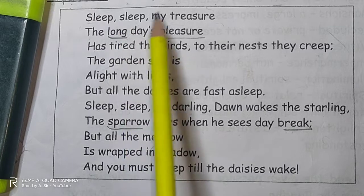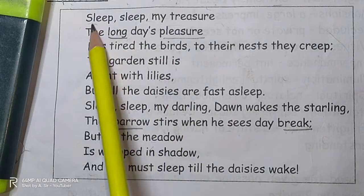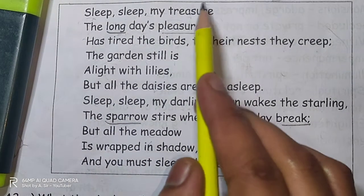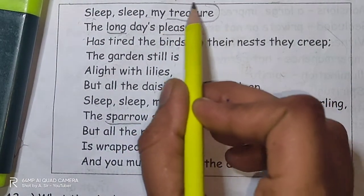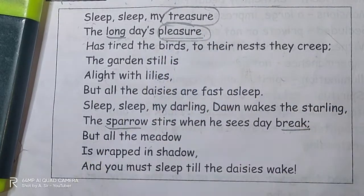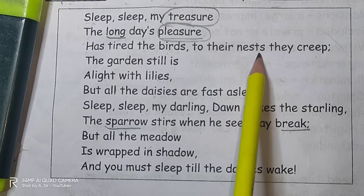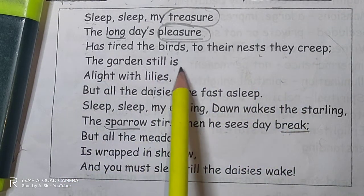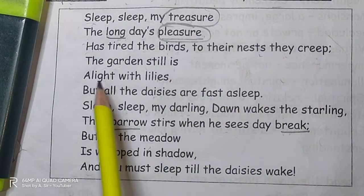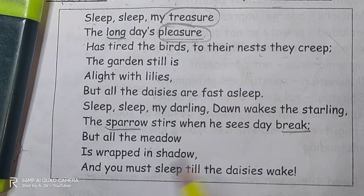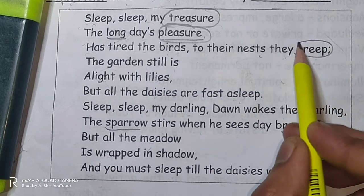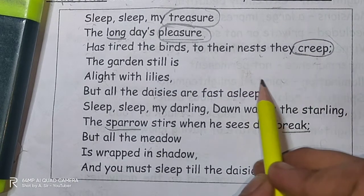In the first two lines, which are the rhyming words? 'Sleep, sleep my treasure, the long day's pleasure.' So yes, treasure and pleasure are rhyming with each other — that is pair one: treasure and pleasure. Next, 'has tired the birds, to their nest they creep' and 'but all the daisies are fast asleep' — so creep and sleep are rhyming. That is pair two: creep and sleep.